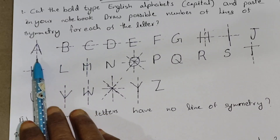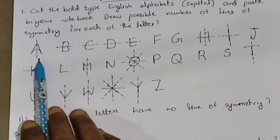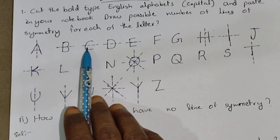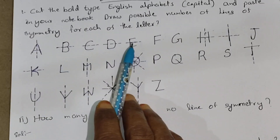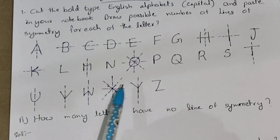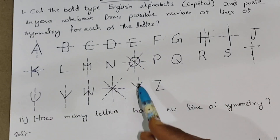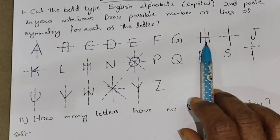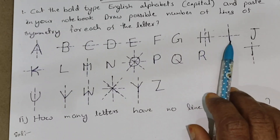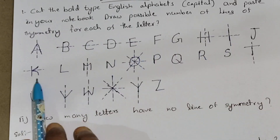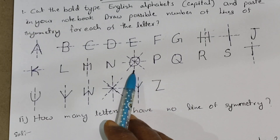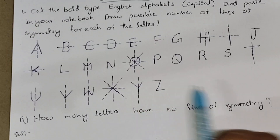A has one vertical symmetry line. B also has one horizontal symmetry line. C, D, E also have only a horizontal line symmetry. H has two symmetric lines. K has one, and M has one. O has four symmetric lines, and it also has rotational symmetry. Some letters have rotational symmetry.